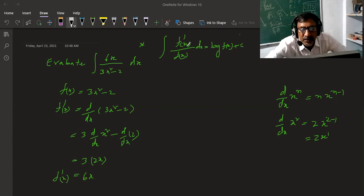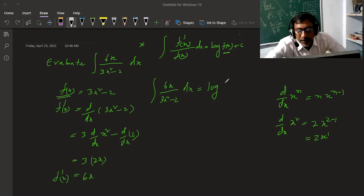f dash x is 6x and f of x is 3x square minus 2. By this formula, integration 6x divided by 3x square minus 2 dx is equal to logarithm of f of x. Here f of x is equal to 3x square minus 2 plus constant. This is the answer.